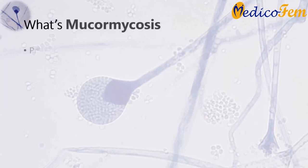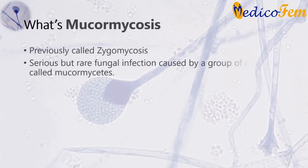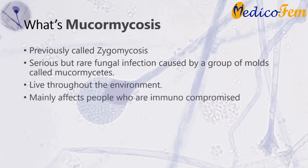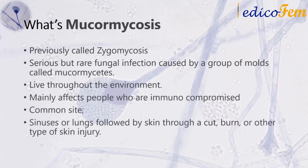Mucormycosis, previously called zygomycosis, is a serious but rare fungal infection caused by a group of molds called mucormycetes. These molds live throughout the environment. Mucormycosis mainly affects people who have health problems or take medicines that lower the body's ability to fight germs and sickness. It most commonly affects the sinuses or the lungs after inhaling fungal spores from the air.